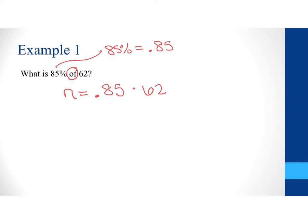So then, when I multiply these out, .85 times 62 is 52.7. So, 85% of 62 is going to be 52.7.